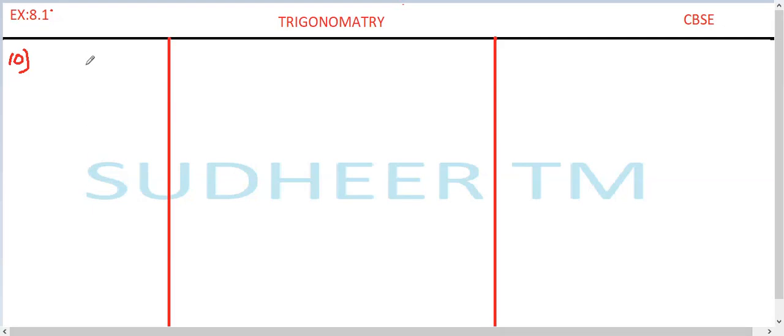Question number 10. In triangle PQR, right angle at Q, PR plus QR is 25 cm, PQ is 5 cm, determine sin P, cos P and tan P.